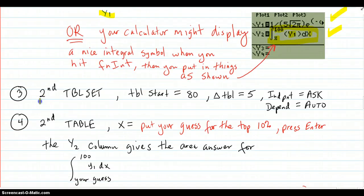Then, you're going to go to second table set. And, this really doesn't matter because you can really start anywhere. But, we're going to start at the mean and go with delta table 5. That's not really critical though. But, what it is, is that the independent, you want to ask, set it to ask, not auto, for asking for the values. Because you want to be able to put in different values. And, for the dependent, that's left on auto.